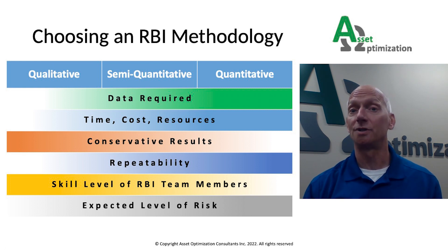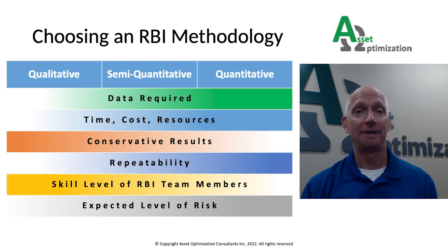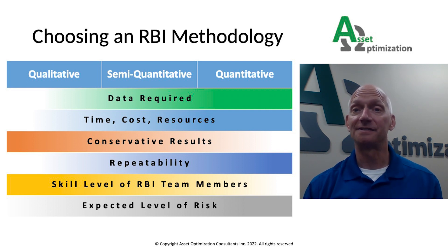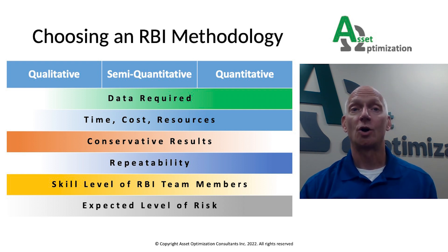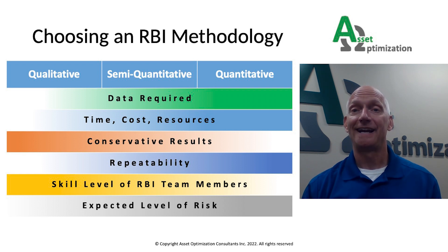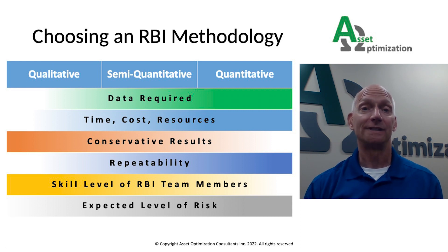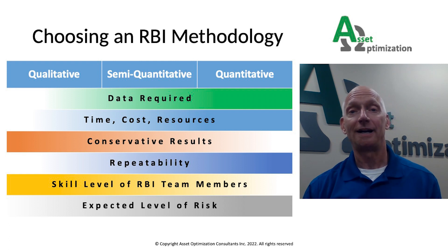Regarding repeatability: because they rely on more numeric inputs and less on expert judgment, more quantitative RBI methodologies are usually more repeatable. This is important when updating risk when changes occur. Qualitative RBI requires a higher level of judgment, skill, and understanding than a more quantitative approach. However, qualitative RBI can be an effective screening tool for quickly identifying units and equipment with low risk, and then more detailed analyses can be utilized for higher risk items.